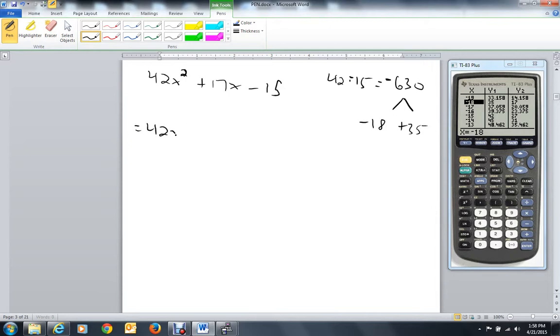Let's go ahead and do this: 42x squared minus 18x, and if you're wondering, it does not matter which one goes first, plus 35x minus 15. From here we can factor. 42 and 18 looks like 6x is what they have in common.